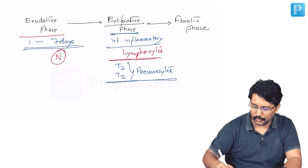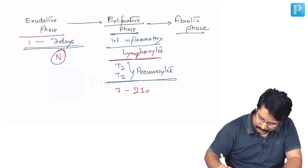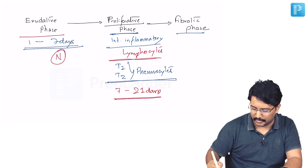Until then there is progression to next phase. The timeline for the second phase is at the end of 7 days to 21 days. So from second and third week is where the proliferative phase is happening.